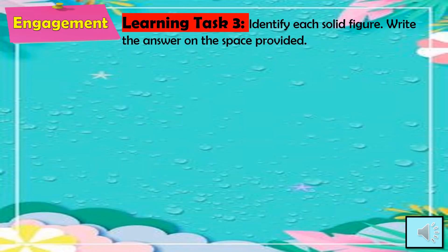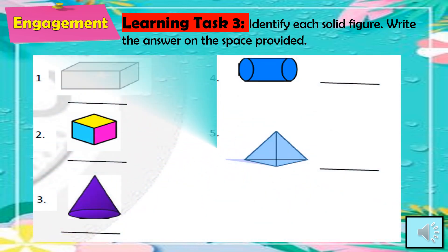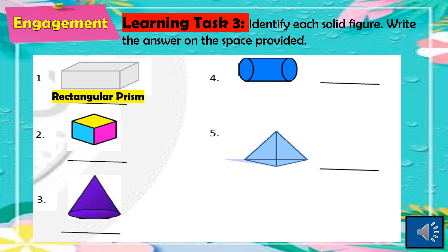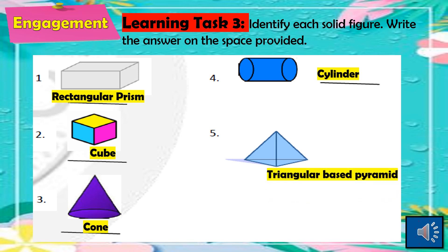For the engagement, Learning Task 3: identify each solid figure and write the answer on the space provided. There are 5 figures. The answers are: number 1 is a rectangular prism; number 2 is a cube; number 3 is a cone; number 4 is a cylinder; and number 5 is a triangular-based pyramid.